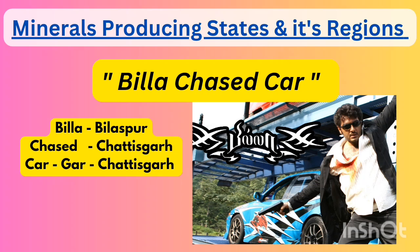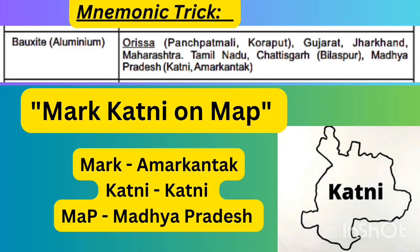Next is also about bauxite. The shortcut is: 'Mark Kattani on map.' 'Mark' resembles Amarkantak, so it represents Amarkantak. 'Kattani' represents Katni. In 'map' — MP represents Madhya Pradesh. So Amarkantak and Katni are bauxite regions in Madhya Pradesh.